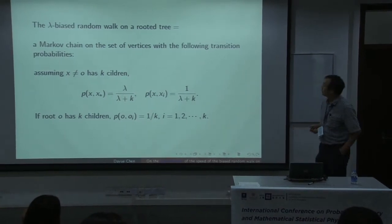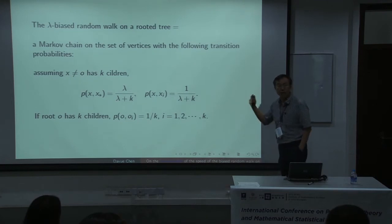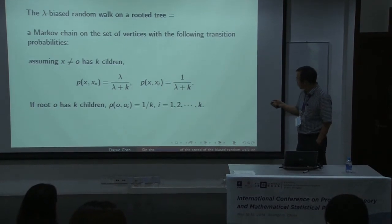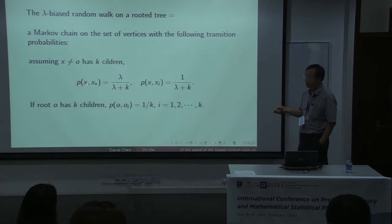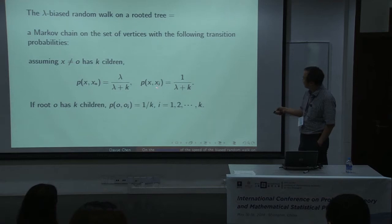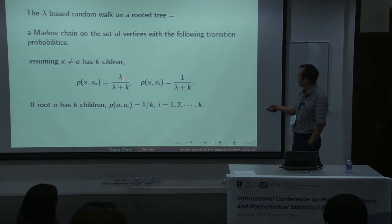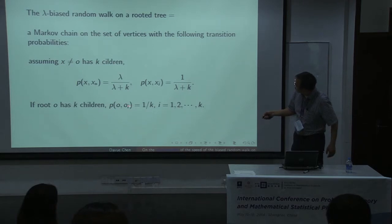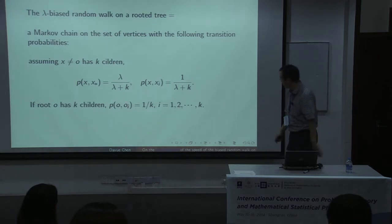Now let's consider the λ-biased random walk — it's a Markov chain, so we only need to specify the transition probability. From any vertex x, with probability λ/(λ+k) we jump to the parent, and the remaining probability is split equally among the children. The parent gets weight λ, while the root is slightly different because it has no parent, so the transition always goes to the children.